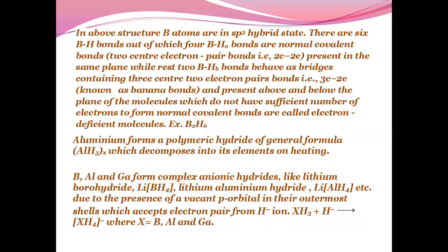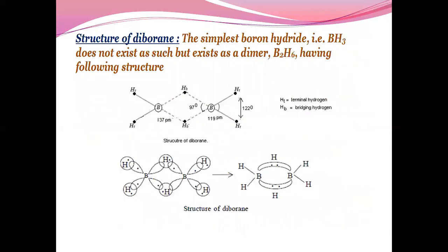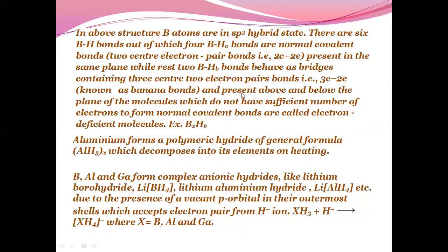In the above structure, boron atoms are SP3 hybridized. There are 6 boron-hydrogen bonds out of which 4 are terminal and 2 are bridged. You can see here, there are 1, 2, 3, 4 terminal hydrogens and 2 bridged hydrogens. These are terminal and bridge hydrogens.